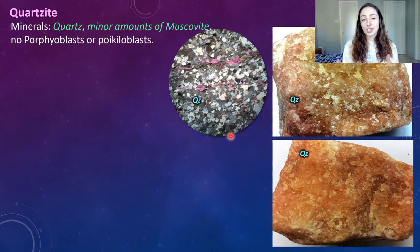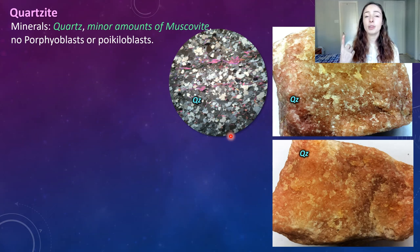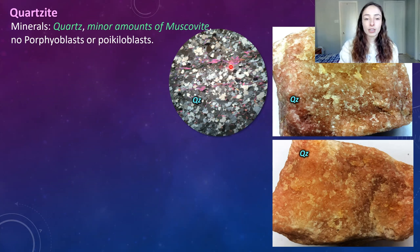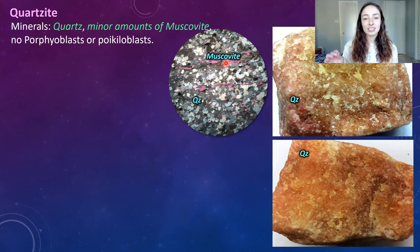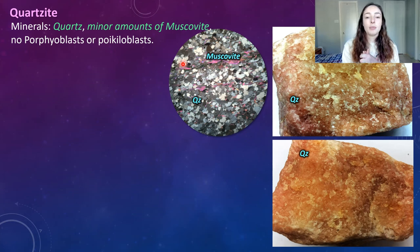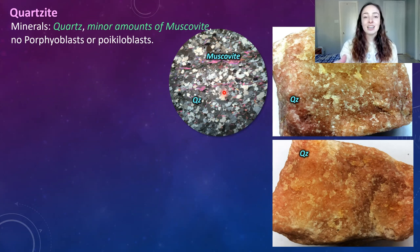We talked about extinction and other optical mineralogy terminology in the optical mineralogy videos — I'll link the first one up here. The other thing we see in this thin section, a minor thing, is a little bit of muscovite — the pink platy stuff. We'll talk way more about muscovite as we get into schists and phyllites. Muscovite alters from clay minerals, so maybe this sandstone had minor amounts of clay that became muscovite when metamorphosed. There are no porphyroblasts or poikiloblasts in this sample because there are no clasts that stand out from the general grain size.